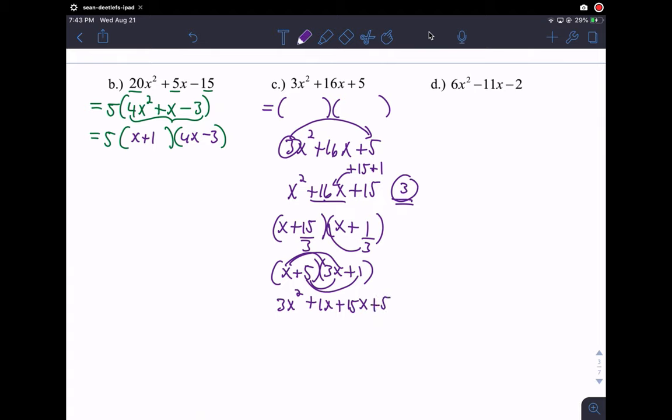And so what we have here, these two combine to give me 16x. So 3x squared, check. 16x, check. Plus 5, check. So again, the answer is not all the scratch work. The answer is this set of binomials right here. x plus 5, 3x plus 1. That's the solution.